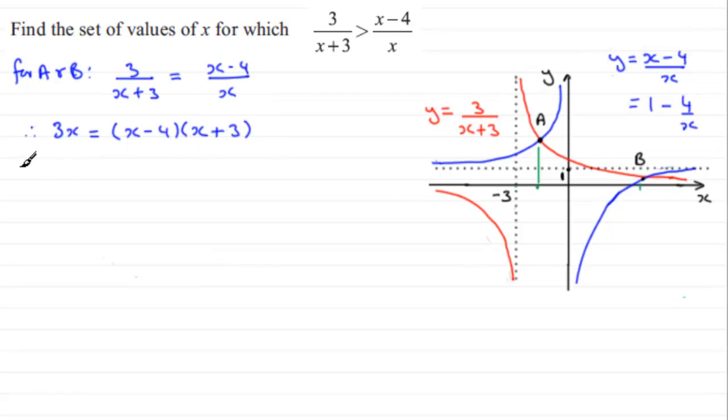And if we do that, we now have 3x = (x-4)(x+3). And therefore if we start to expand out our brackets, we get x^2, and then we've got 3x - 4x, which is -x, and then -4 multiplied by +3, which is -12. We've got a quadratic here, so let us rearrange it by subtracting the 3x from both sides. So we get x^2 - 4x - 12 = 0.